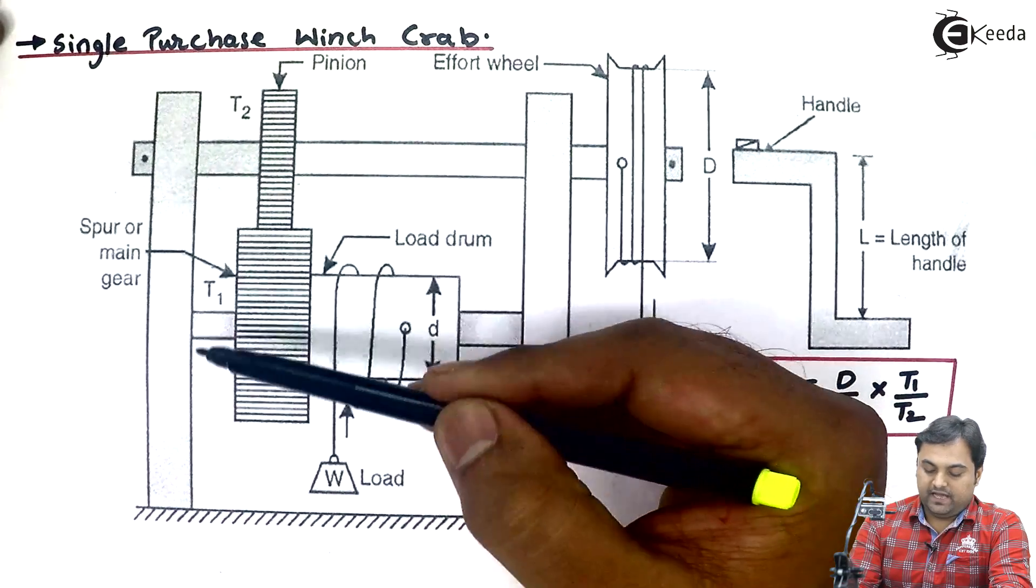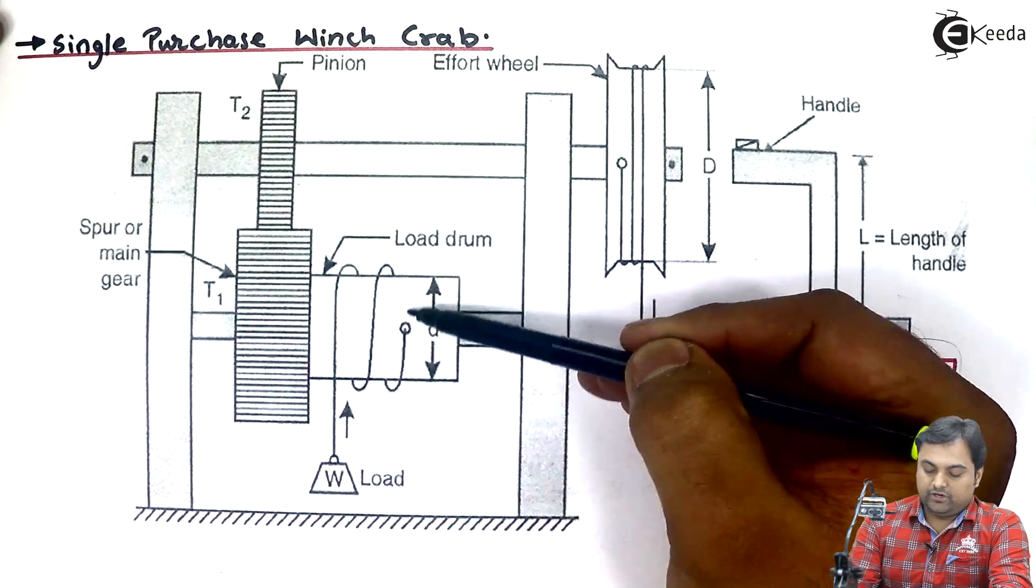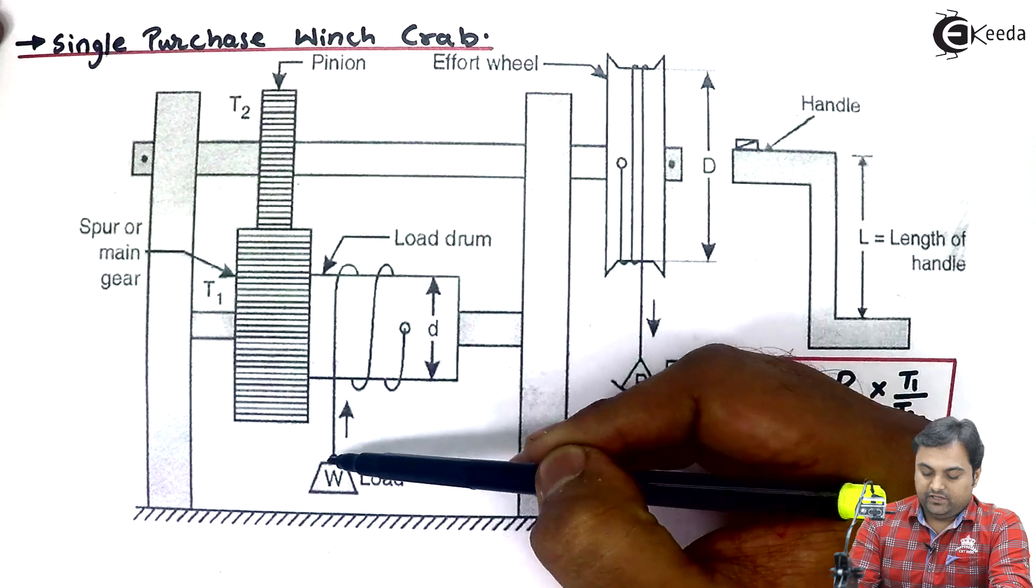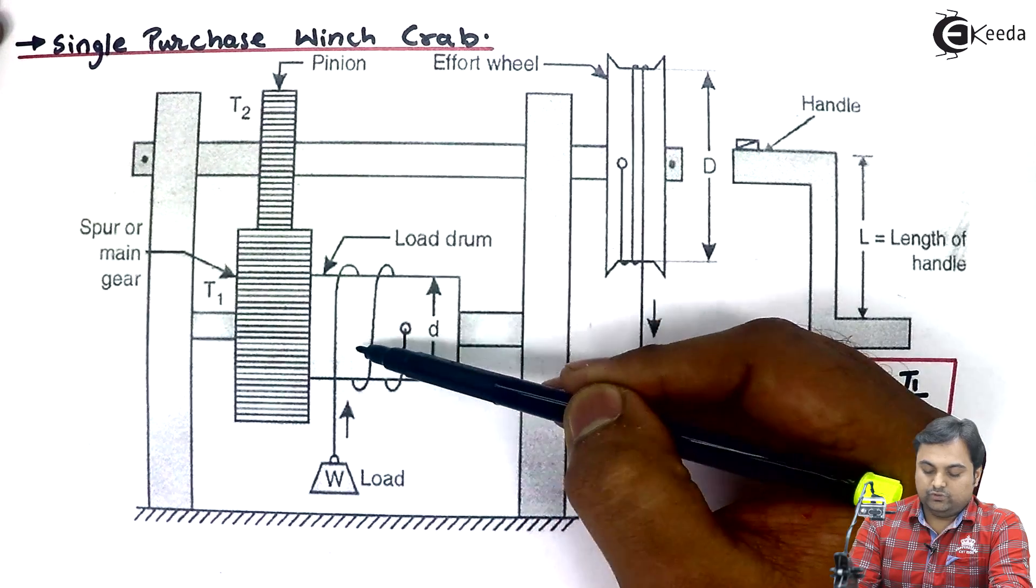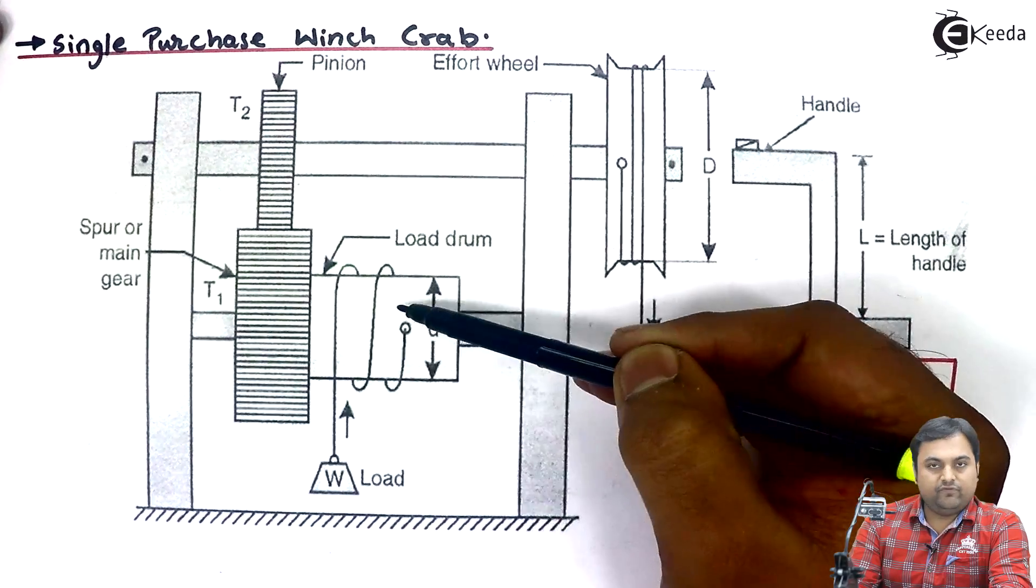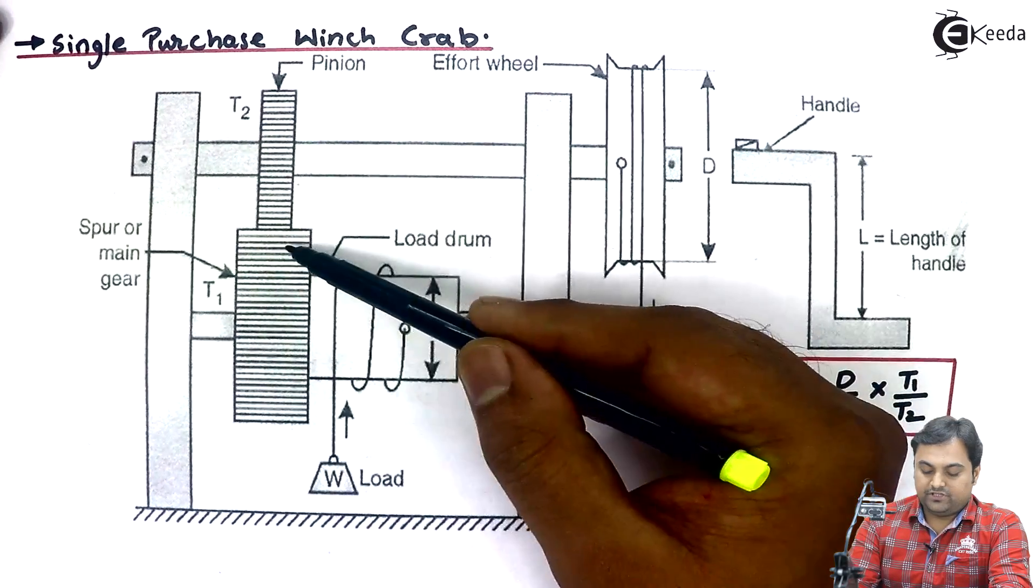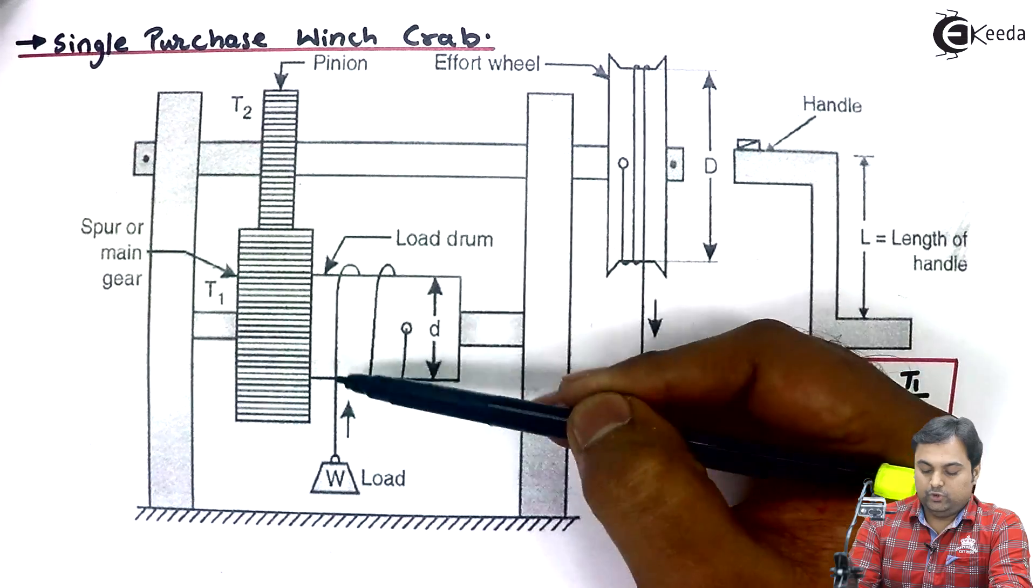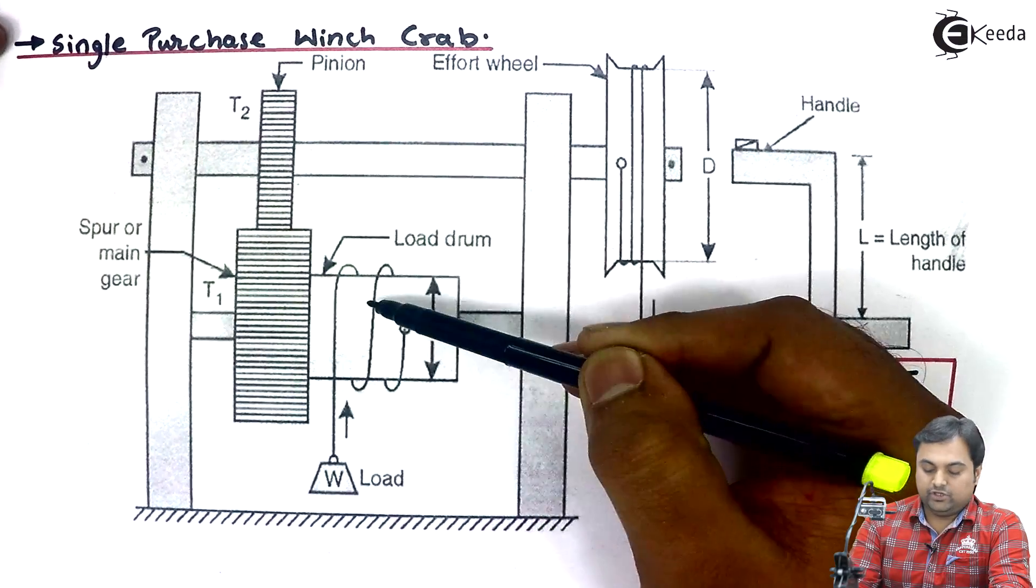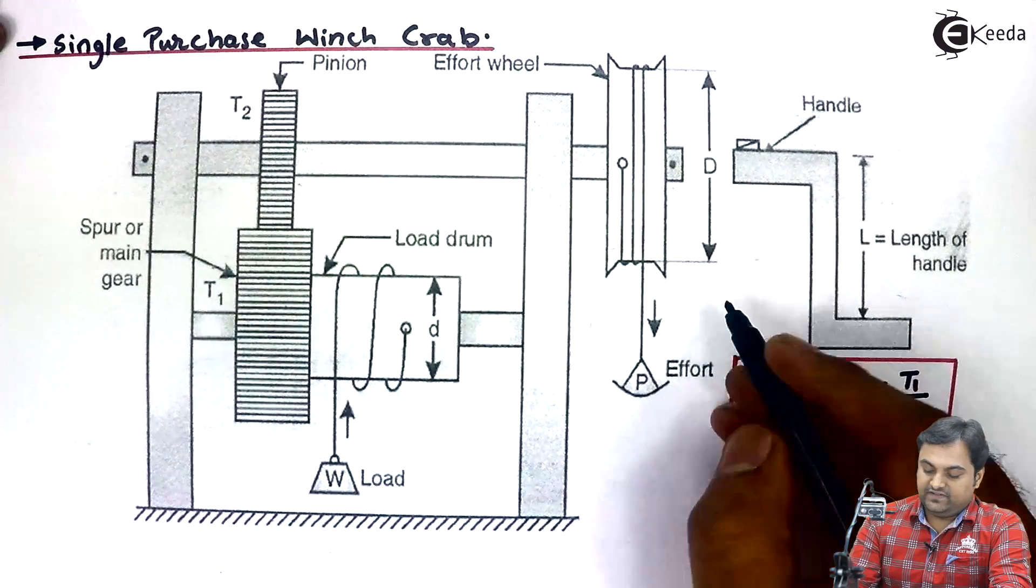Spur gear will also rotate, and when this spur gear rotates, the load drum rotates. Finally, when the load drum is rotating, this load, since it is wound on the load drum, it starts winding fast. When the spur gear is rotating, this load drum will wind the string over it and hence the load is lifted.